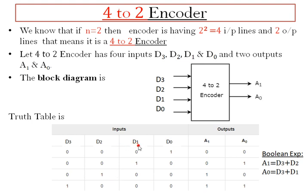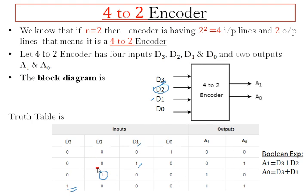When D2 is activated, decimal 2 is the input for the encoder. We know decimal 2 is represented as 1 0. Similarly, when D3 is activated, decimal 3 is the input, and decimal 3 is represented as 1 1. This completes the truth table formation for the 4-to-2 encoder.